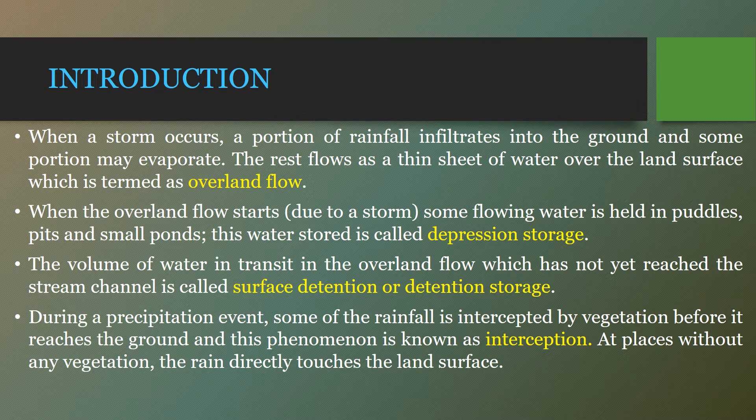Runoff is the portion of precipitation that makes its way towards rivers or any water body. When surface water flows after the precipitation, rainfall or precipitation flows towards the river or water body through surface or subsurface flow — that is runoff.